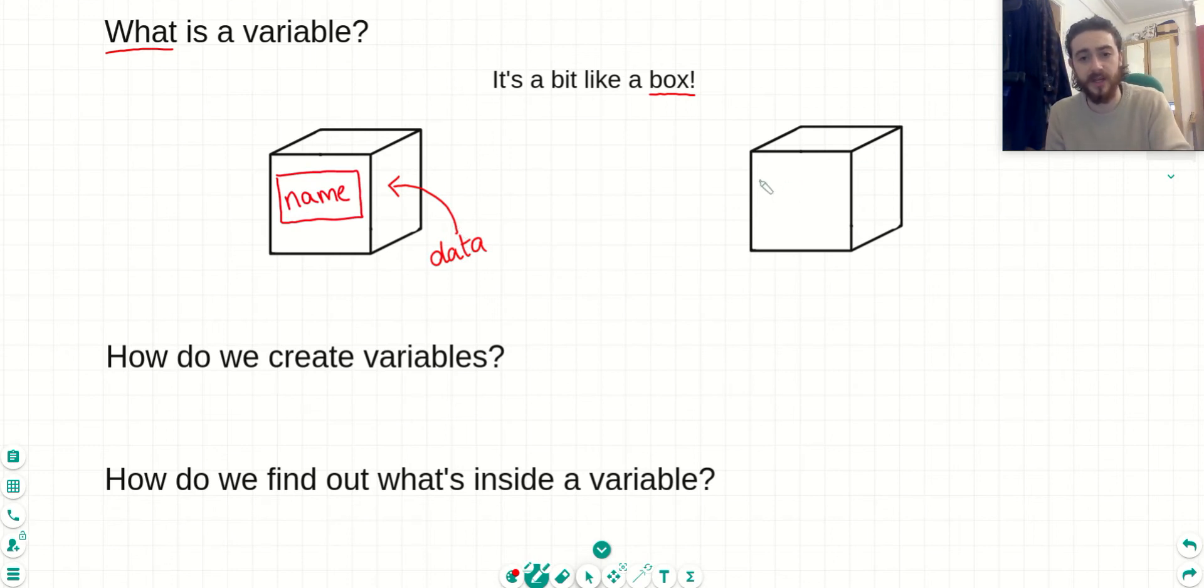So if we do a quick example over here, let's create a variable and we're going to give it the name number. And inside of this variable, I'm going to put the number 31 because it's my favorite number. And that would just be a variable called number with a value of 31 inside of it.